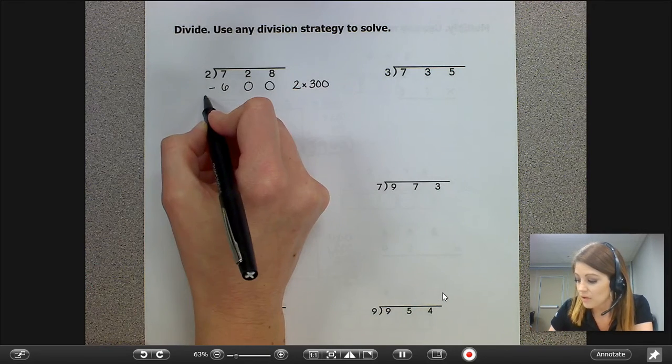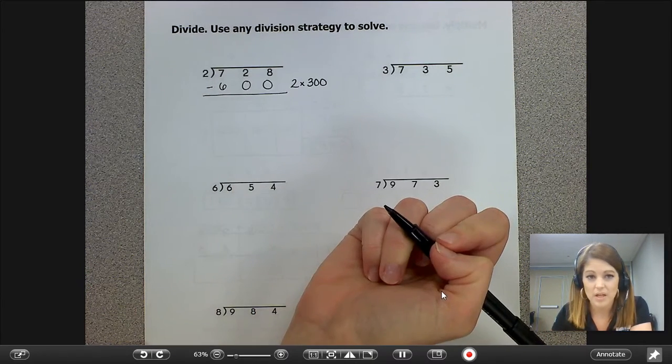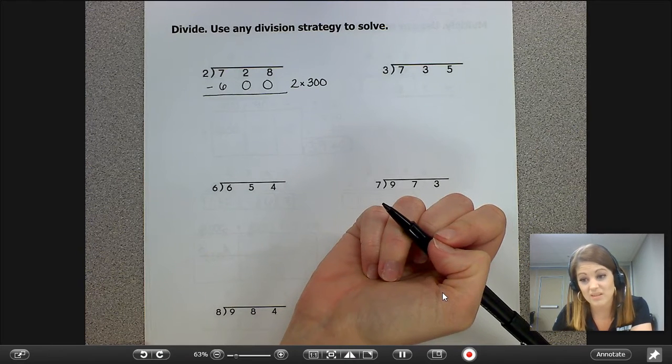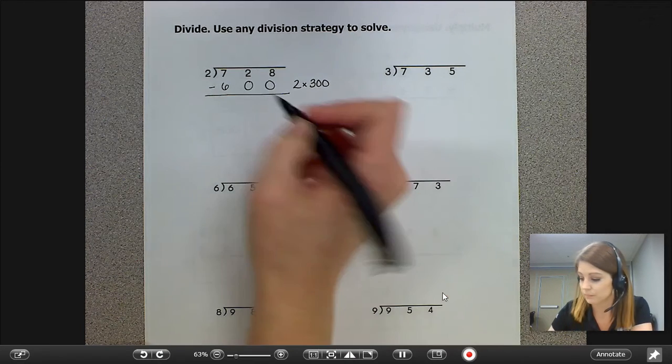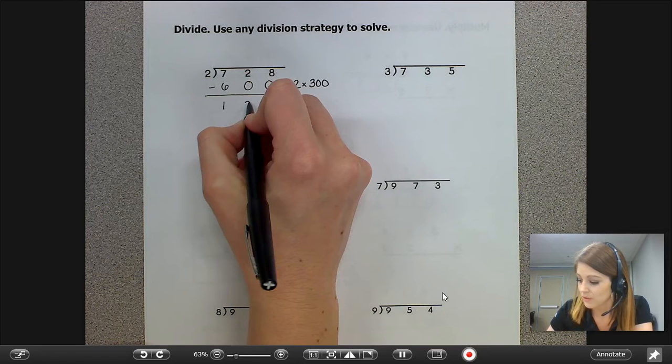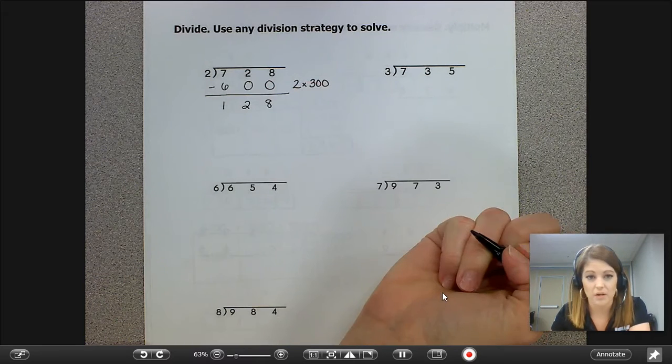I'm going to put 600 underneath 728, and I'm going to subtract because division is repeated subtraction. When I subtract those two numbers, the difference is 128.